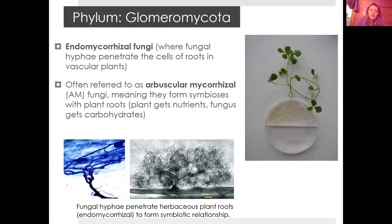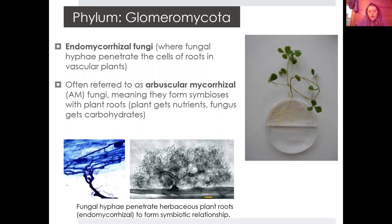These types of fungi are also referred to as arbuscular mycorrhizal fungi or vesicular arbuscular mycorrhizal fungi — VAM or AM fungi — meaning that they are forming a symbiosis with plant roots. The plant is getting nutrients out of it, and the fungus gets carbohydrates.